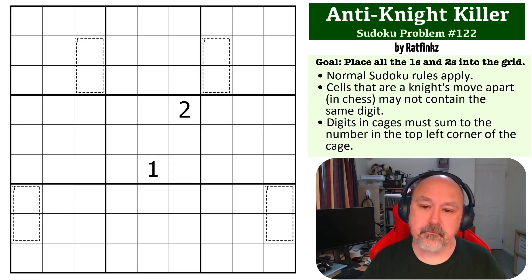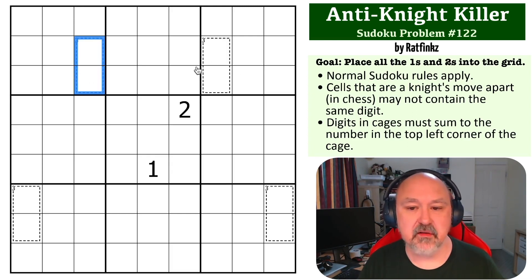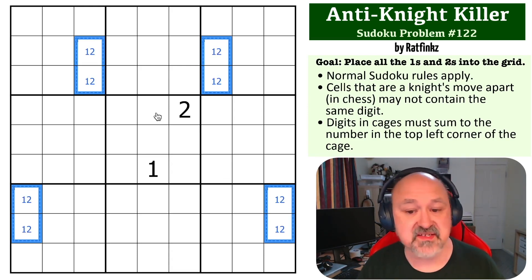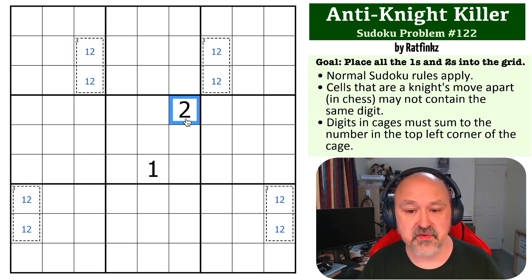Okay, so we can immediately look at the three cages and know the only way you can make up three in Sudoku digits is one plus two. There's no other way to do it, and there's some deductions we can make there. So the two, this is a knight's move shape, so that cannot be a two because they would see each other. So this would be the one, this is the two, which automatically makes this the two and this the one.